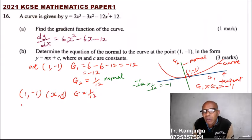So we say y minus y minus minus 1, that will give you plus 1, divided by x minus 1 should give you 1 over 12.